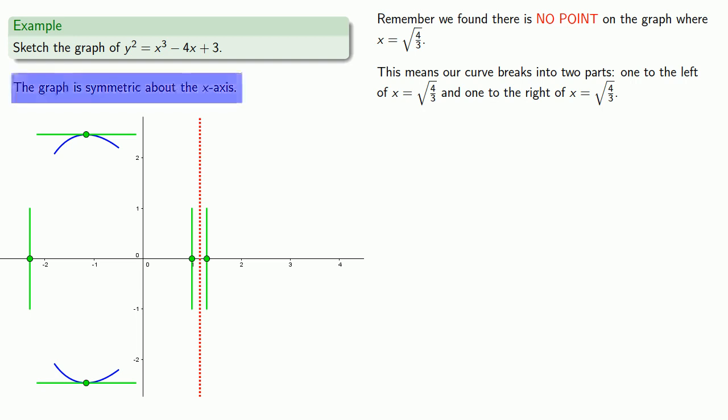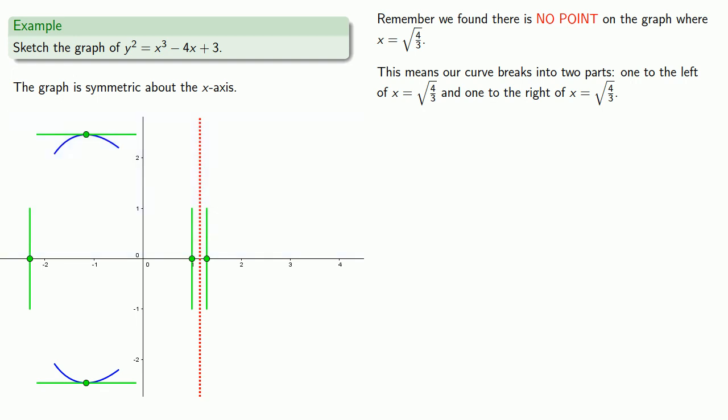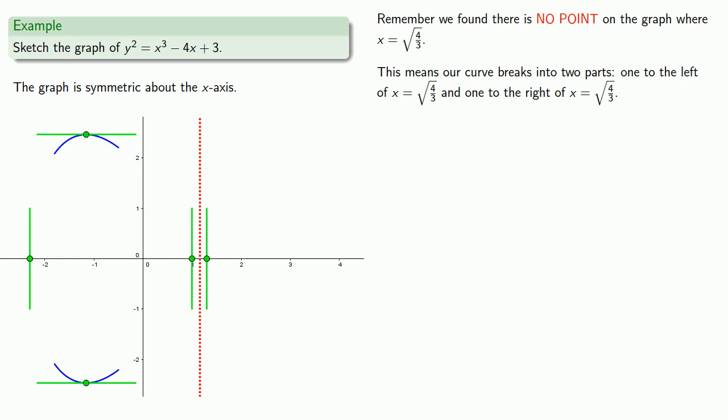Because the graph is symmetric about the x-axis, we can focus on what happens above the x-axis. With the do not cross line, we can focus on what happens to its left and right. On the left, we can connect the dots, keeping in mind that at the beginning and end, our tangent line should be vertical. One possibility is to draw something like this.